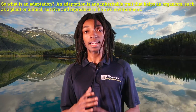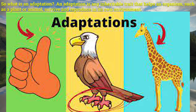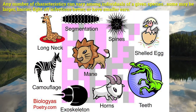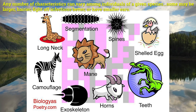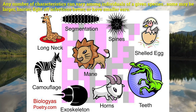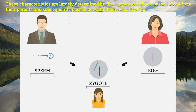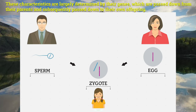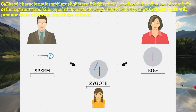So what is an adaptation? An adaptation is any inheritable trait that helps an organism such as a plant or animal survive and reproduce in its own environment. Any number of characteristics can vary among individuals of a given species. Some may be larger, hairier, find food better, or have smaller ears. These characteristics are largely determined by their genes, which are passed down from their parents and subsequently passed down to their own offspring.